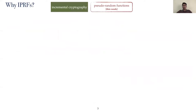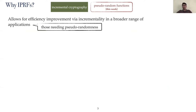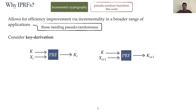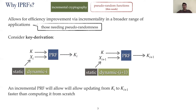Why are incremental pseudorandom functions of interest? Adding incrementality to PRFs allows for improving efficiency via the use of incremental functions in a broader range of applications, more specifically those that need pseudorandomness. Consider the application of key derivation, where an application holding a key k regularly uses its data to generate subkeys ki. This data may consist of a mix of static data which stays constant and dynamic data which is different at each iteration. Using an incremental PRF will allow updating the key from ki to ki+1 faster than computing it from scratch.